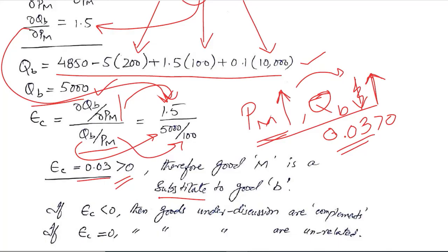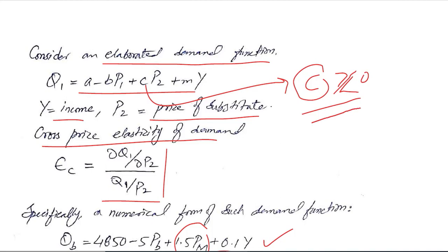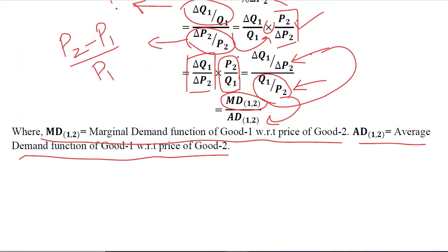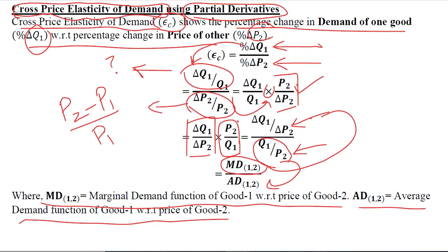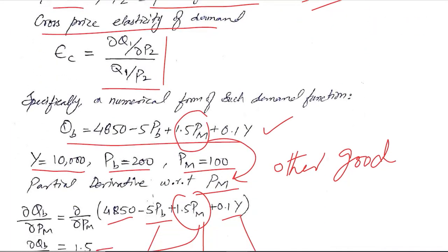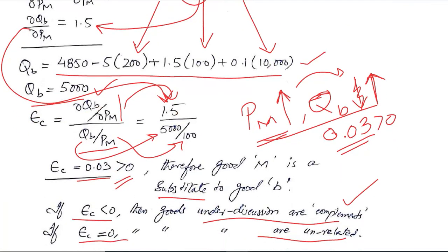If the answer were less than zero — that is, negative — the two goods would be complements. If the answer equals zero, the goods are unrelated. This verification confirms what we already understood. In this video, we have understood the cross price elasticity of demand using partial derivatives both symbolically and numerically, and finally interpreted the results from an economic and real-life point of view.